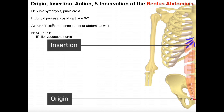The action of the rectus abdominis is really trunk flexion. Regardless of whether you're doing a sit-up or the reverse motion, either one is a trunk flexion. The other thing that the rectus abdominis does is tense the anterior abdominal wall — it compresses the viscera posterior to it, all the organs in the abdominal cavity, providing support so that they don't move around, especially during heavy lifts or whenever you're carrying a large load.